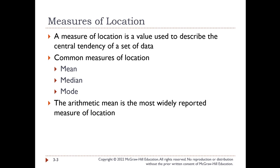Starting off first: measure of location. These are the three big ones that we typically use — the three M's: mean, median, and mode. These measures of location are values used to describe the central tendency of a set of data. The arithmetic mean is the most widely reported measure of location.